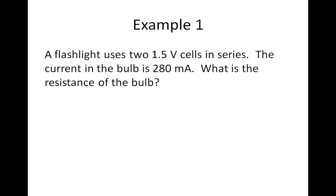In example one, a flashlight uses two 1.5 volt cells in series. The current in the bulb is 280 milliamps. What is the resistance of the bulb? The first step is to create a data list. When cells are in series, we add their voltages, so we have a 3 volt battery.